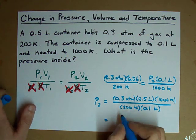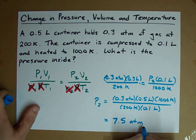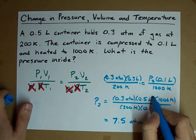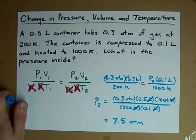When you do that on your calculator, you end up with 7.5 atmospheres. Notice my units cancel out. I've got liters on top, liters on bottom, Kelvin on bottom, Kelvin on top. The units I'm left with is atmospheres.